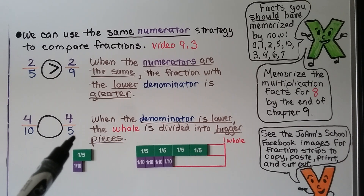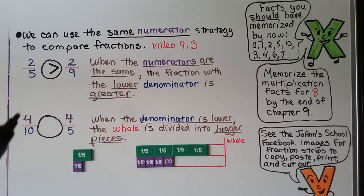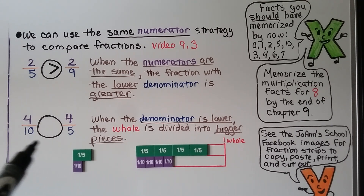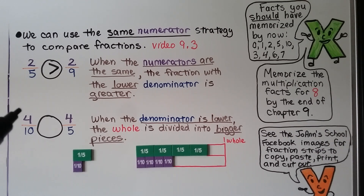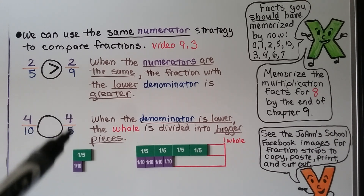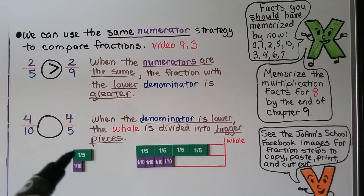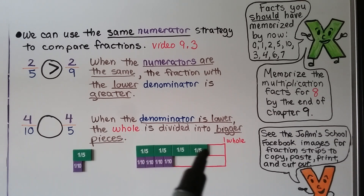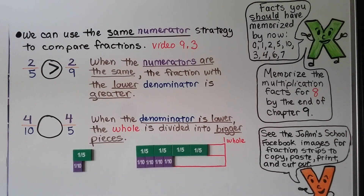Here we have four-tenths and four-fifths. They have the same numerator, so we're going to use the denominator — the fraction with the lower number is greater because the whole is divided into bigger pieces. This is divided into ten pieces; this is divided into five pieces. We have four of the ten pieces here, and four of the five pieces there — that's almost the whole thing, almost five-fifths. A one-fifth piece is much larger than a one-tenth piece, so four-fifths is much more than four-tenths. We know four-tenths is less than four-fifths.